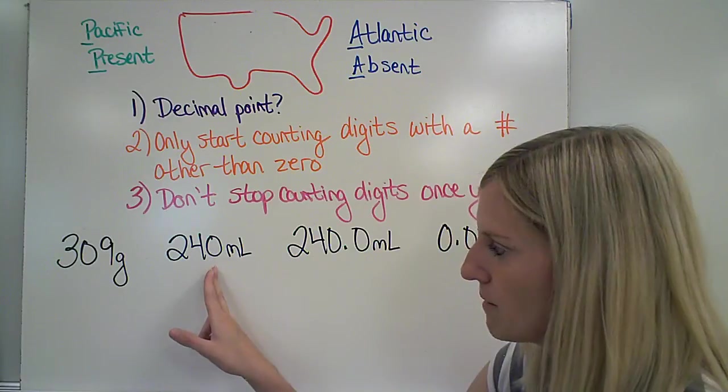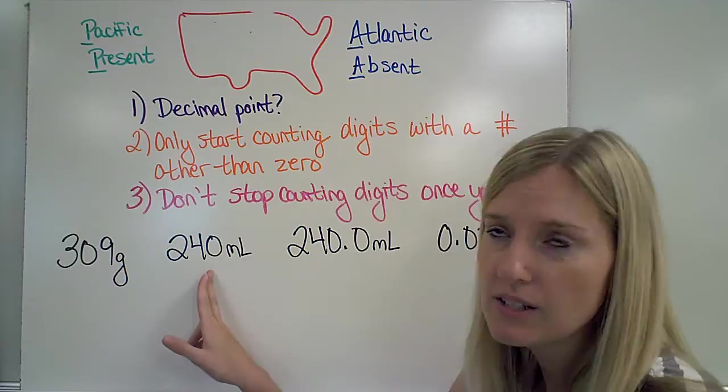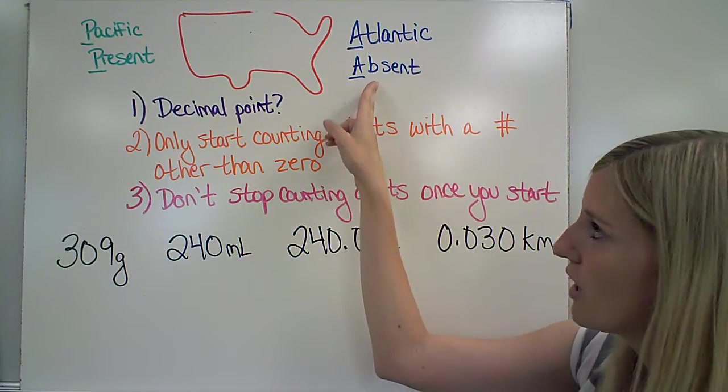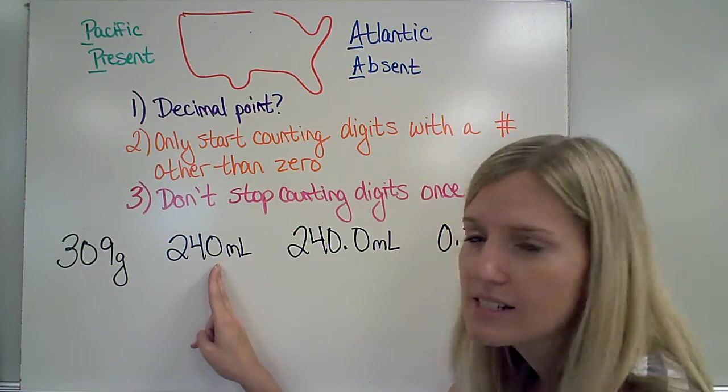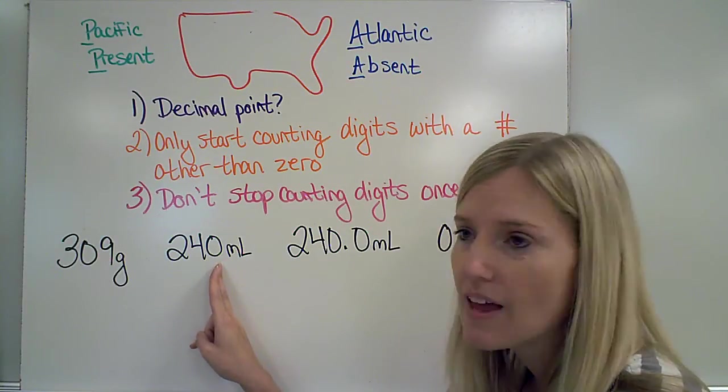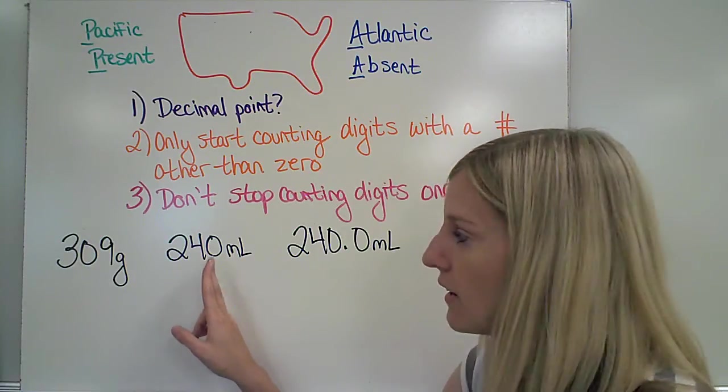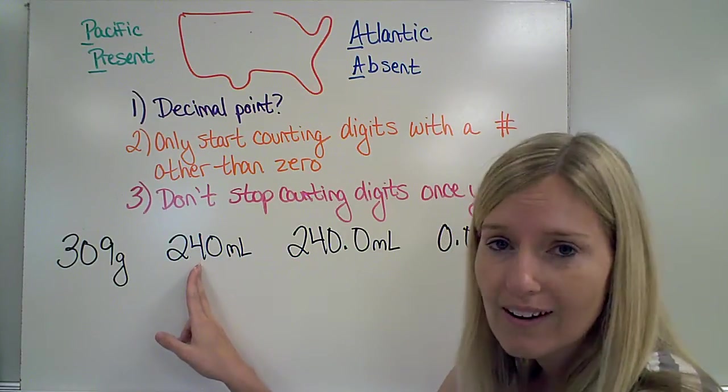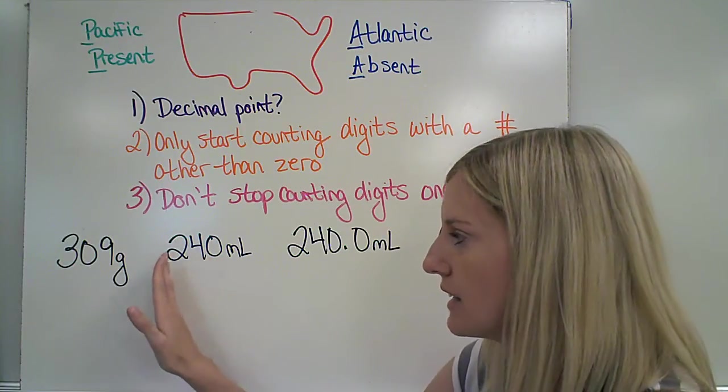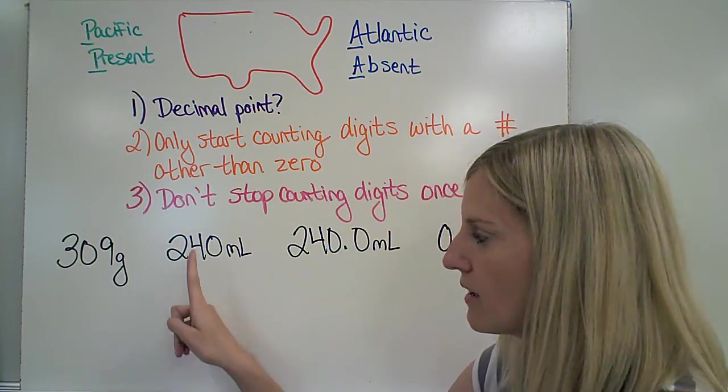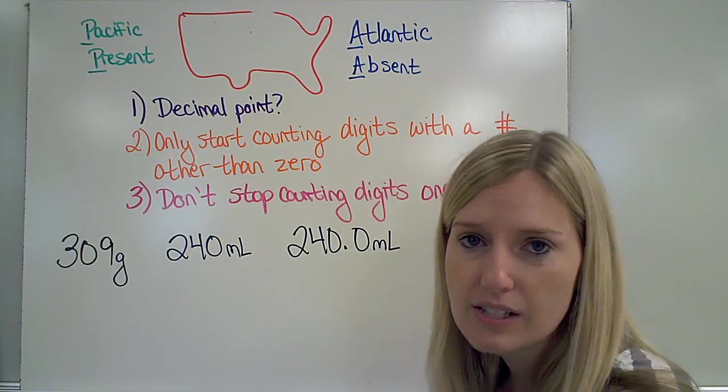My second number, first of all, do I have a decimal point? No. The decimal point is absent. So, I'm going to start on the right-hand side of the number. The first digit I see is a 0. I cannot start counting with that, so that 0 does not count. The next digit is a 4. I can start counting with that, and I will count all the way to the beginning of the number now. So, the 4 counts and the 2 counts. This number only has 2 significant figures.